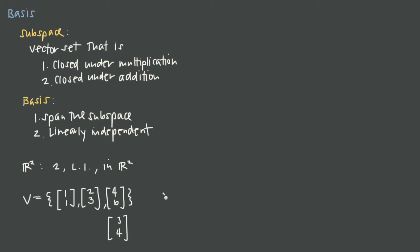So if instead we define V as just the vector [1,1] and the vector [2,3], these two vectors are linearly independent, both defined in R2, and we have only two of them — so they form a basis for the subspace R2. To test whether a vector set forms a basis for a particular subspace, we need to check both conditions: the set must span the subspace and be linearly independent.